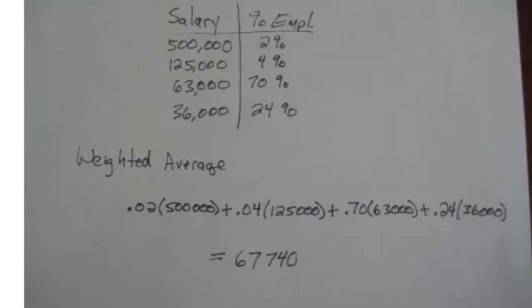You might want to try this just to practice with your weighted averages. You would get a value of $67,740.